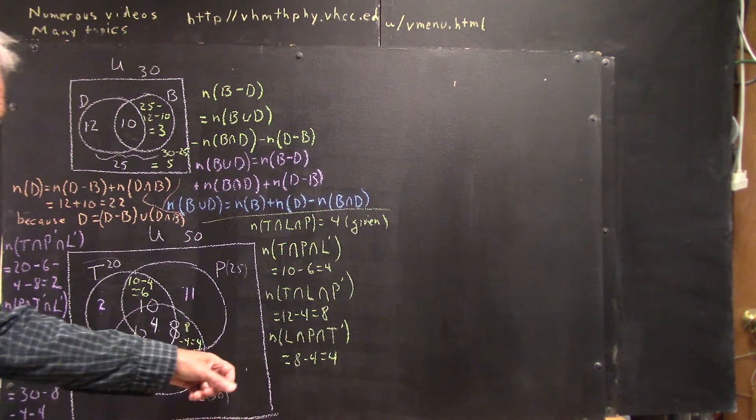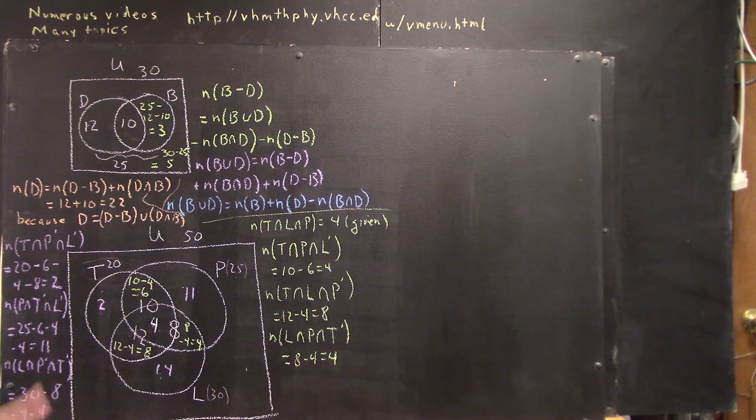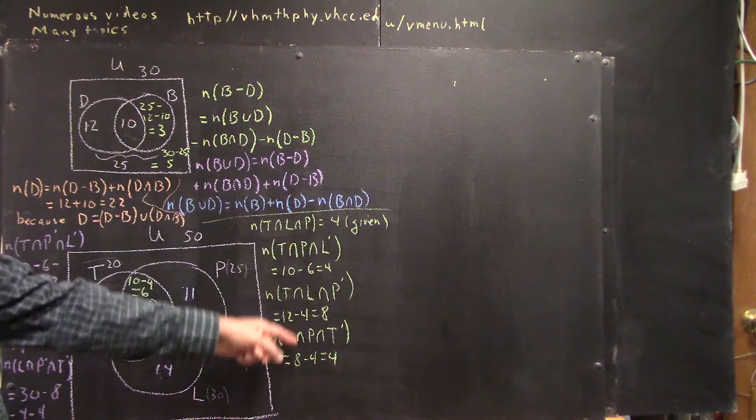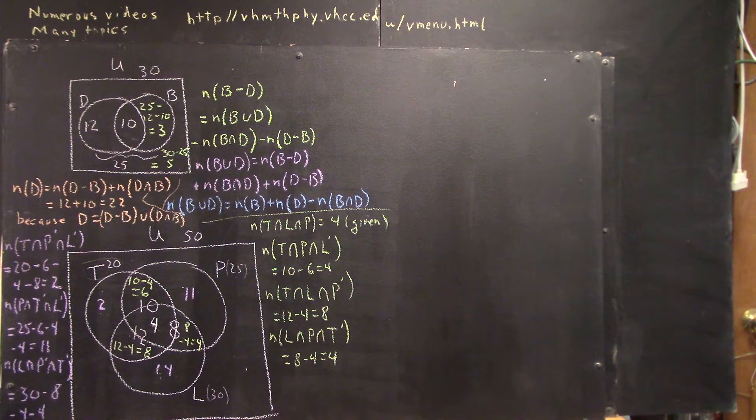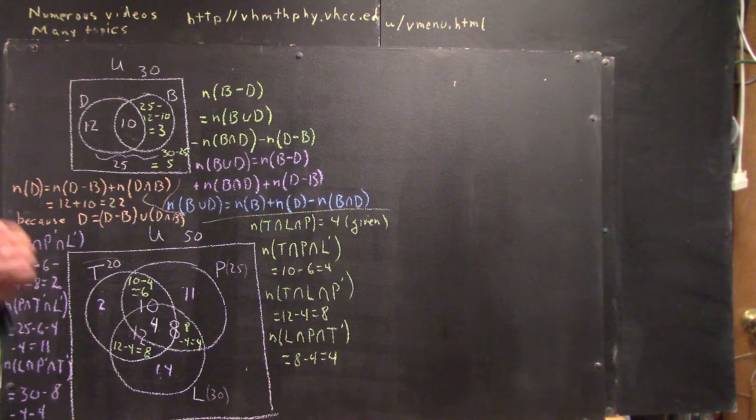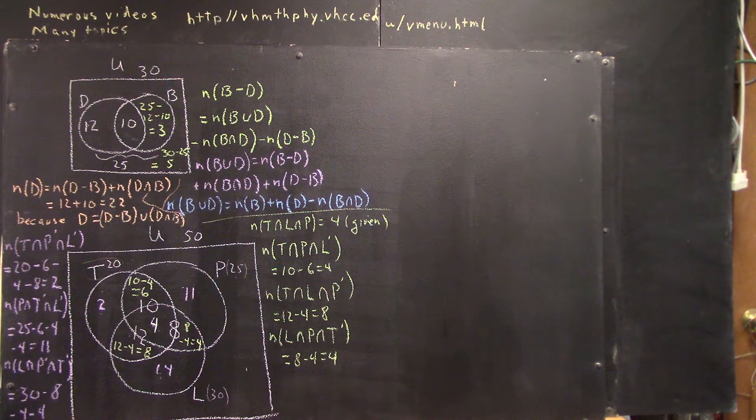There are many ways we can calculate this last region, and there were other ways that we could have calculated some of the others. With these regions, we're pretty much stuck calculating it exactly as we did here. We do have some options, and once you've seen the options here, you might understand them a little better.